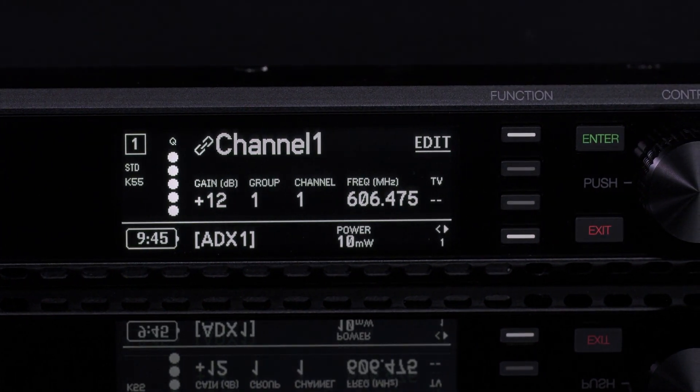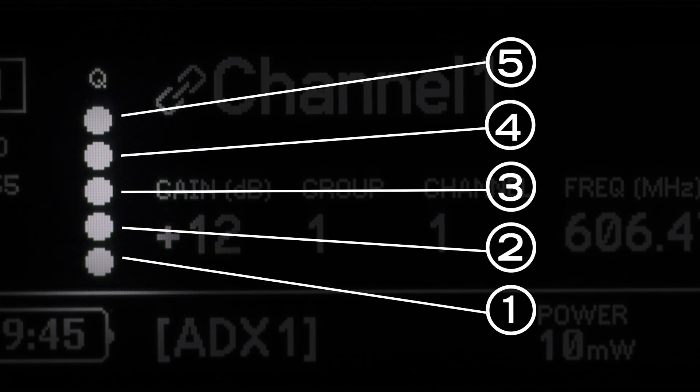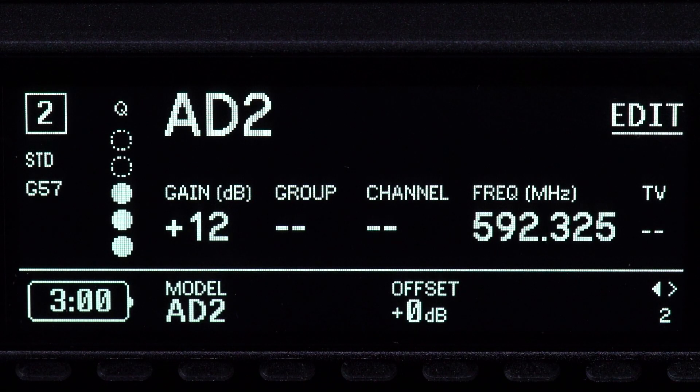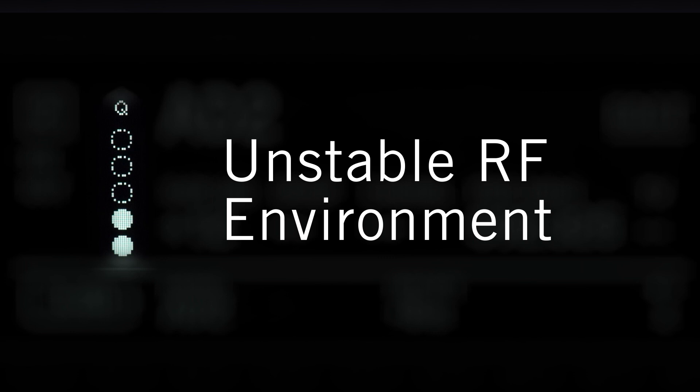Channel quality can range from 0 to 5 segments. In typical applications, a channel quality meter of 3 or better indicates a stable RF environment. If you're seeing a persistent reading below 3, consider switching to a new frequency or moving the transmitter closer to the receiver antennas.